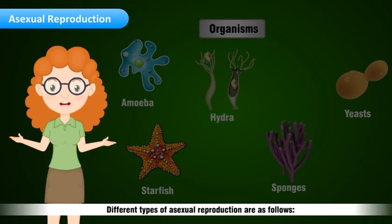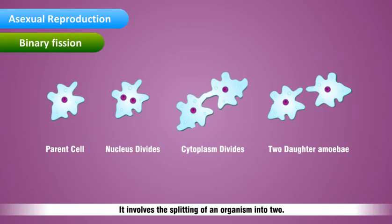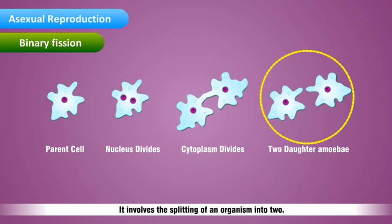Different types of asexual reproduction are as follows. Binary fission: it involves the splitting of an organism into two. Amoeba reproduces by this method.